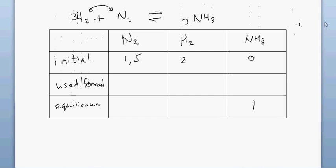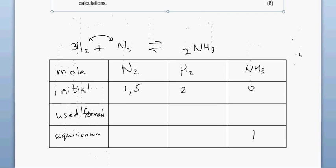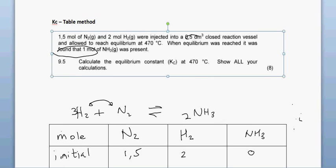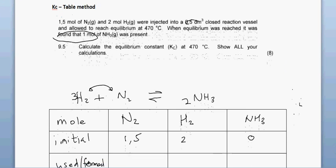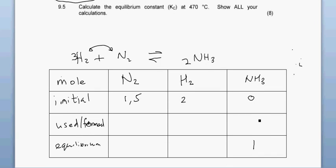This is a mole table — that is important to note. Now the question is: how do we work out our Kc value? We need to complete the table. The amount of ammonia initially was zero and at equilibrium there is one mole, so the question is: how much ammonia was formed? One mole of ammonia was formed from nothing.